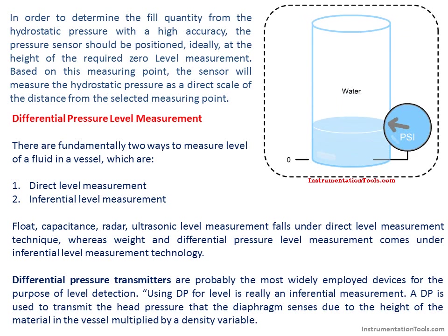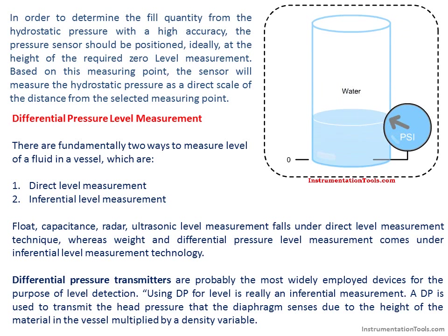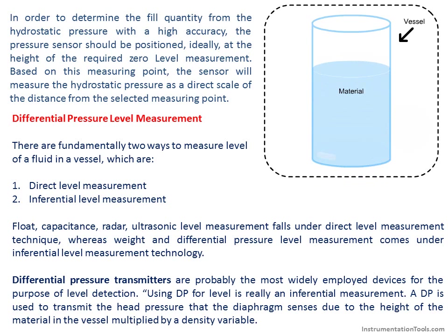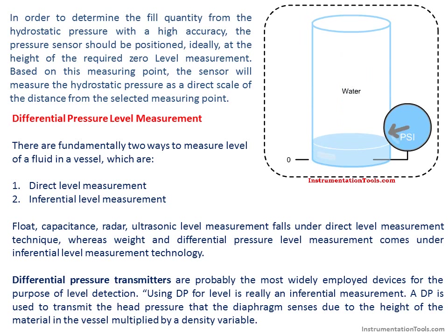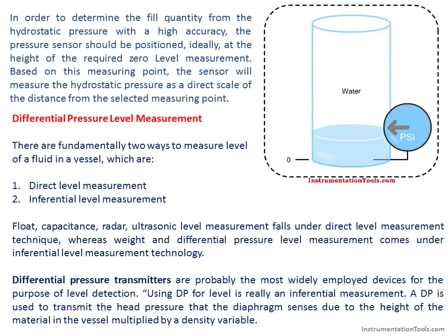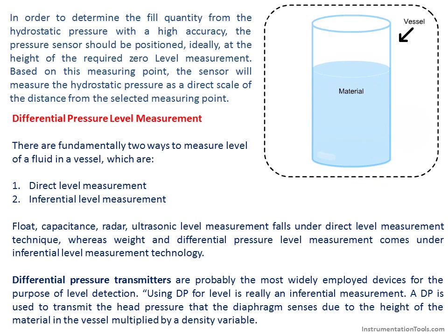Differential pressure transmitters are probably the most widely employed devices for level detection. Using a DP transmitter for level is an inferential measurement — it transmits the head pressure sensed by the diaphragm due to the height of material in the vessel, multiplied by a density variable.